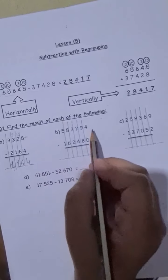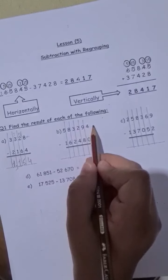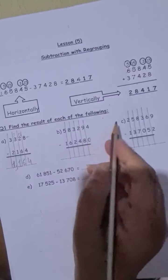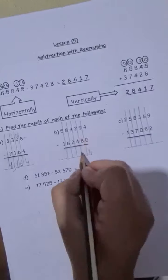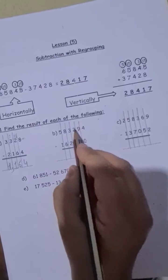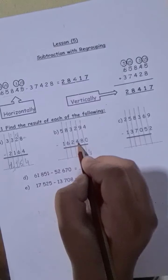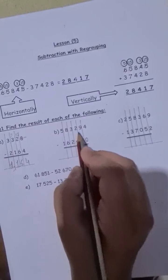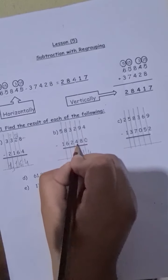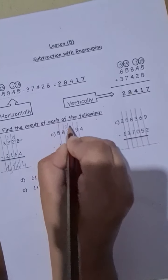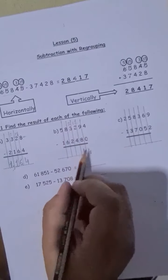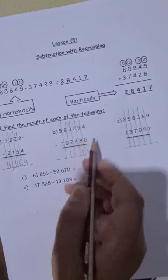Another example. Here, more on top, no need to stop. 4 minus 0 is 4. 9 minus 8 is 1. 2 minus 4, we cannot, because it is not more on top. It's more on floor. So I will go next door. The 3 becomes 2, and the 2 becomes 12. Now, 12 minus 4 is 8.